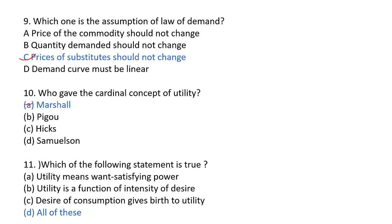11th question: which of the following statements is true? Statement one: utility means want-satisfying power — this is a right statement. Statement two: utility is a function of intensity of desire — how much intensity is your desire to buy goods, we call that utility. Statement three: desire of consumption gives birth to utility. So all these statements are true, and the answer will be D: all of these.